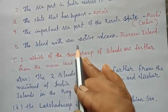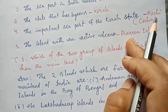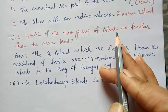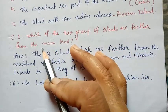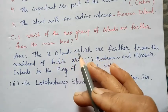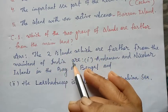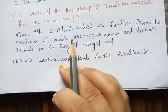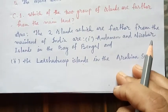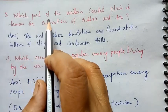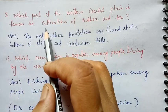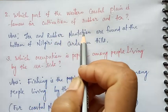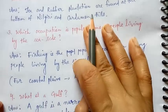The island with an active volcano is Barren Island. The two island groups further from the mainland of India are Andaman and Nicobar Islands in the Bay of Bengal and Lakshadweep Islands in the Arabian Sea. The part of the Western Coastal Plain famous for cultivation of rubber and tea — tea and rubber plantations are found at the bottom of Nilgiri and Cardamom Hills.